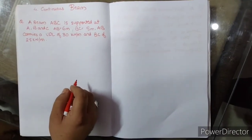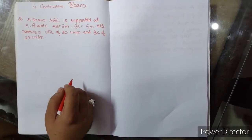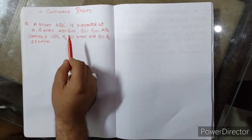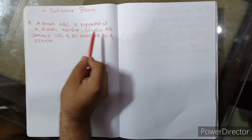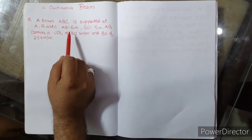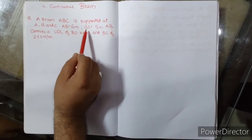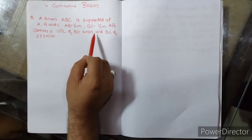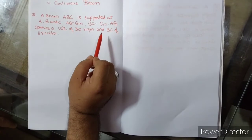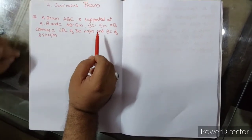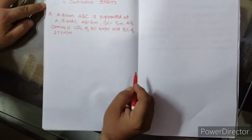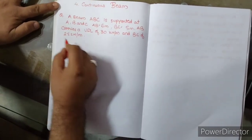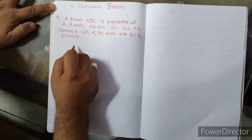So students, welcome to our first numerical. In continuous beam, what is given here is: a beam ABC is supported at A, B, and C. AB is equal to 6 meter, BC is equal to 5 meter. AB carries a UDL of 30 kilonewton per meter and BC carries 25 kilonewton per meter. So what we have to do first is we have to draw a diagram considering the question.